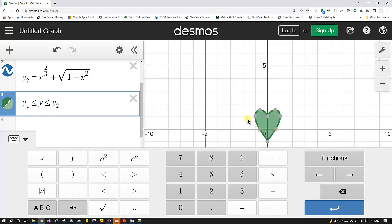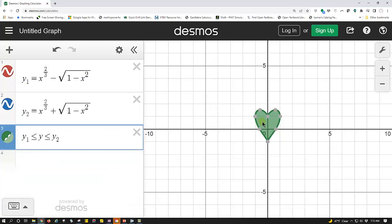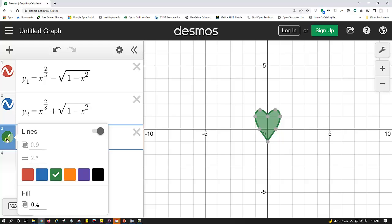Notice right now in the coordinate plane, we have a green heart. Let's close the keypad. We can change the color of the heart by clicking and holding on the green circle on the far left of cell three and selecting a different color.